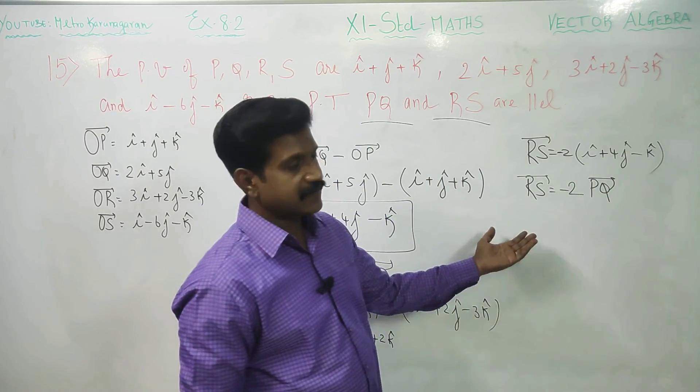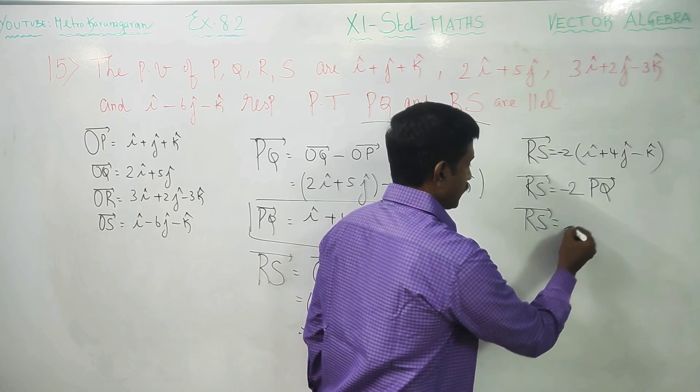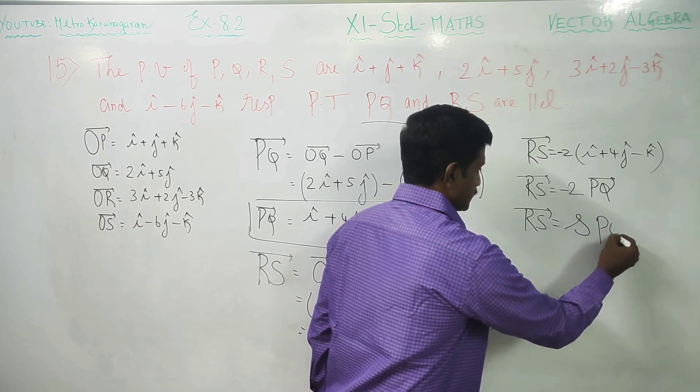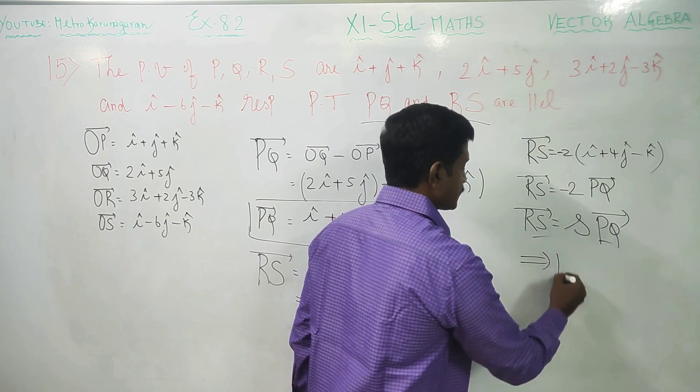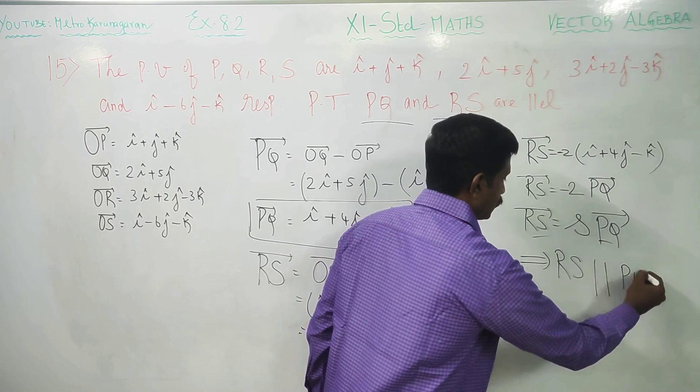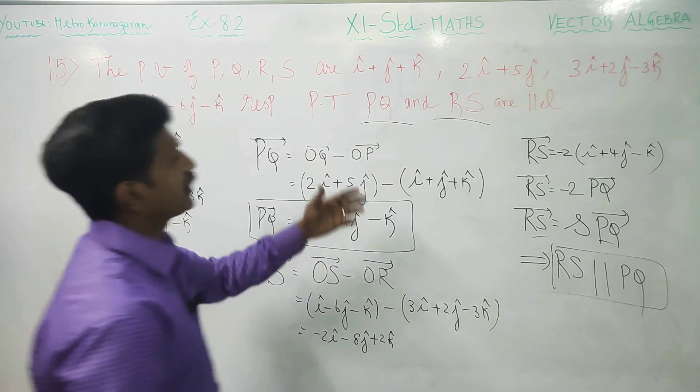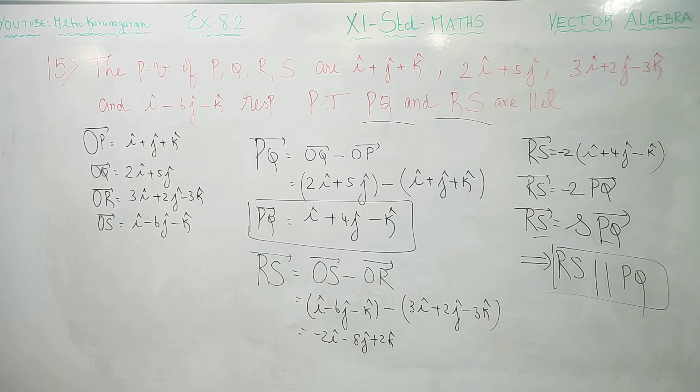If one vector is expressed as a scalar multiple of other vector, means these two lines are parallel, implies RS is parallel to PQ. This is the proof. If one vector is expressed as scalar multiple of another vector, then the given vectors or lines are parallel. Thank you.